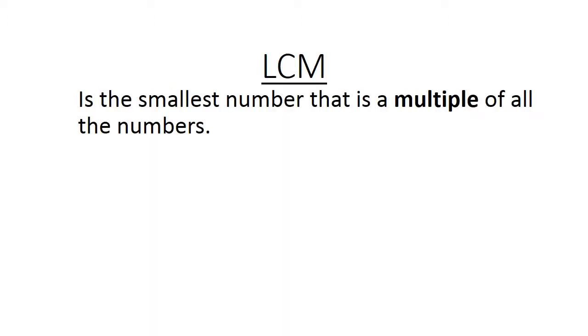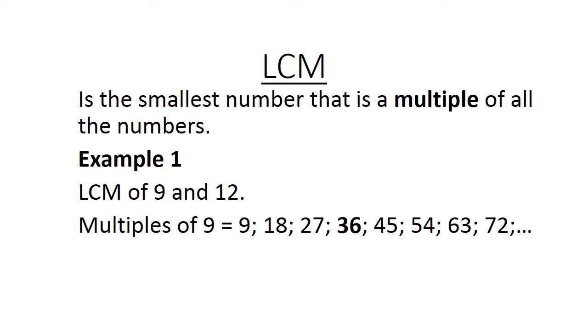Lowest common multiple is the smallest number but is a multiple of all the numbers. Example 1. A multiple also refers to a times table. So the lowest common multiple of 9 and 12. Multiples of 9 are 9, 18, 27, 36.